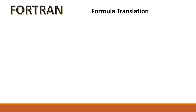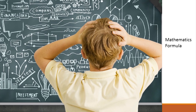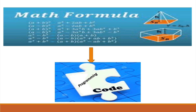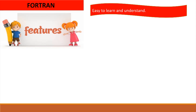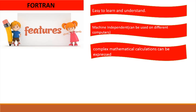Fortran, also known as Formula Translation, is a general-purpose imperative programming language appropriate for numeric and scientific computations. Mathematics has many formulas which are not directly understandable by computers. Fortran is used to convert all mathematical formulas into programming code which can be executed by the computer. Hence, Fortran was designed to allow translation of mathematical formulas into code. Features include: it is easy to learn and use, and it is machine-independent, so it can be used on several computers. It also enables complex mathematical formulas to be expressed in coded form.